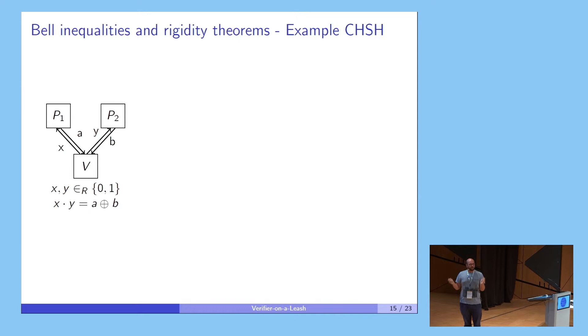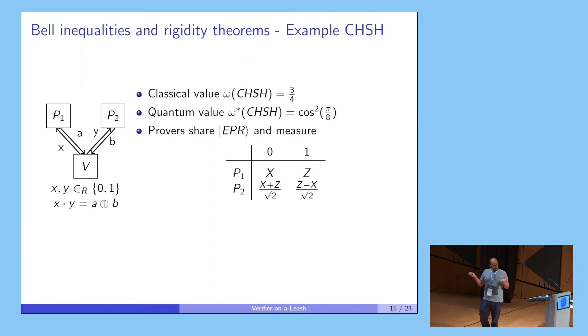For instance, a famous game is the CHSH game, where the verifier just sends random bits to the provers, the provers answer some values A and B, and the provers pass the test if and only if the multiplication of the questions is equal to the sum of the answers. In other words, they pass the test if the parity of the answers is one, if and only if both questions are one. If you think a little bit, you see that if they only share classical randomness, the provers cannot pass this test with probability more than three-fourths. However, it was shown that if these provers, there is a quantum strategy for such provers, that they pass it with probability extremely bigger than three-fourths. So quantum communication will allow them to solve this problem with higher probability.